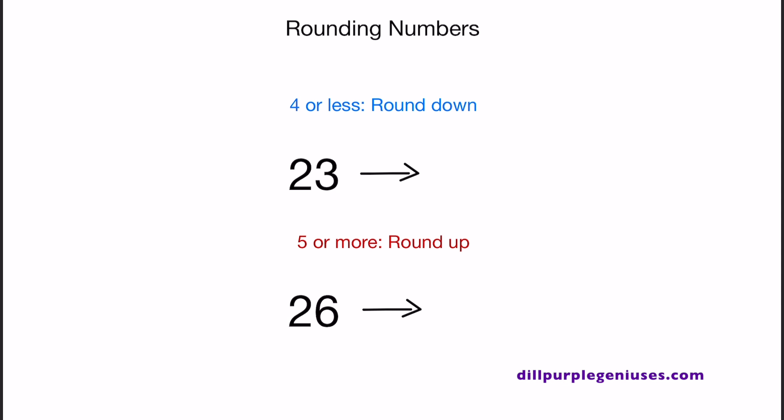When a number is 4 or less, you need to round down. Let's look at 23 for an example. Let's say we want to round 23 to the nearest tens place. To do that, you need to look at the number that is to the right of the tens place. In this case, it is 3. So 3 does belong in a category that is 4 or less. Therefore, we have to round down. When you round down 23, you should come out with 20. Let's look at the next example.